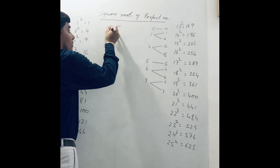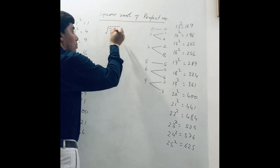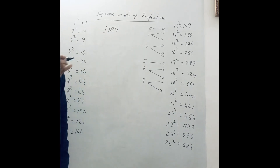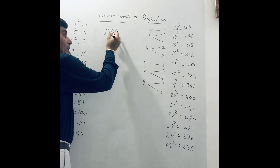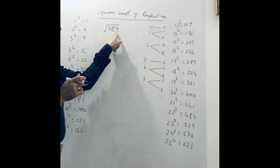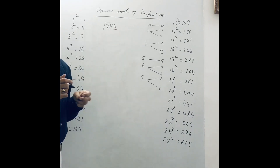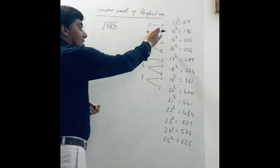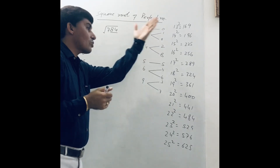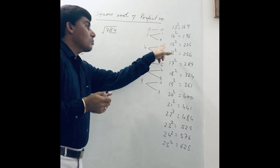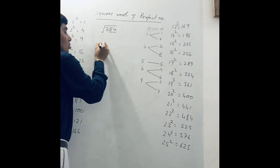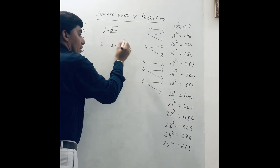Find the square root of 784. Pairing this number from the back side: 84 is a pair. Since the unit place is 4, after finding the square root, the unit place is either 2 or 8. So we write 2 or 8.